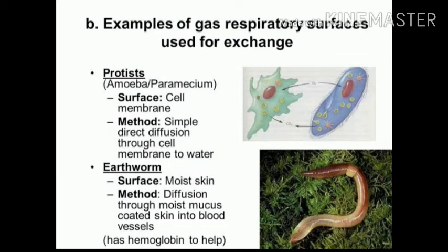Animals get the supply of oxygen from the surroundings. Land animals breathe in oxygen from the air, while fish and other aquatic animals take oxygen from water. Different animals have different types of organs for breathing.